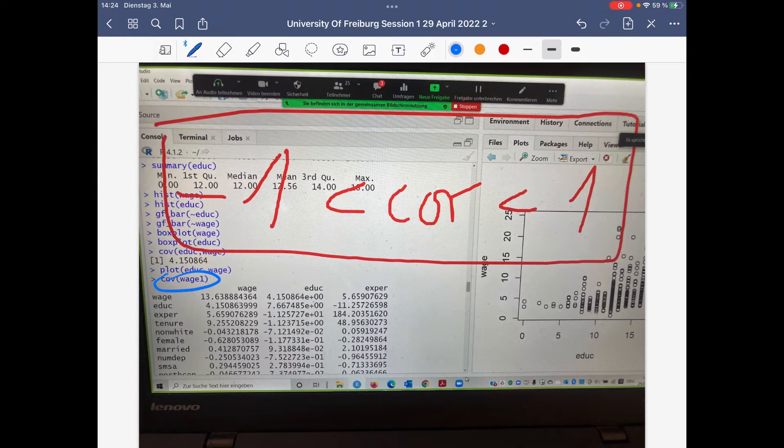However, you see the variance covariance matrix. The covariance, let's say between wage and education, is 4.15. However, the number depends on the metrics, and therefore it's not standardized. You better standardize, and then you end up with a correlation coefficient.